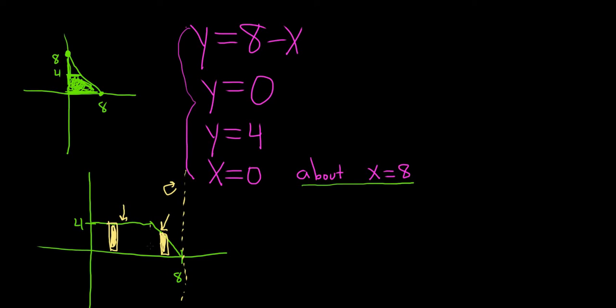So that means that we would have to split this up and then do two separate integrals to find the volume, so that's a lot of work. So what we'll do is we'll redraw our picture and we'll use a horizontal rectangle so that we can do this problem with only one integral.